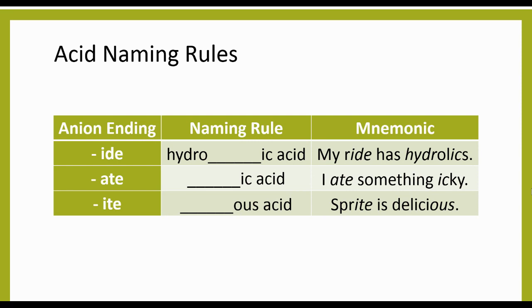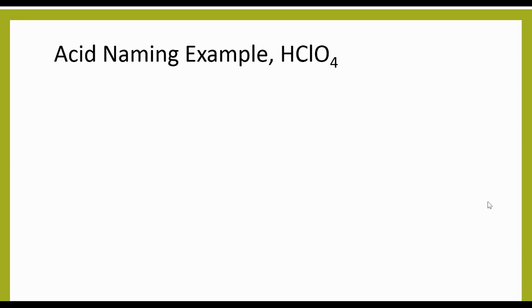The final anion naming rule for things ending in -ite, so like nitrite. For these, we take the stem, so for nitrite it'd be nitr, and then we add -ous, so nitrous acid. The mnemonic for this one is 'sprite is delicious.'